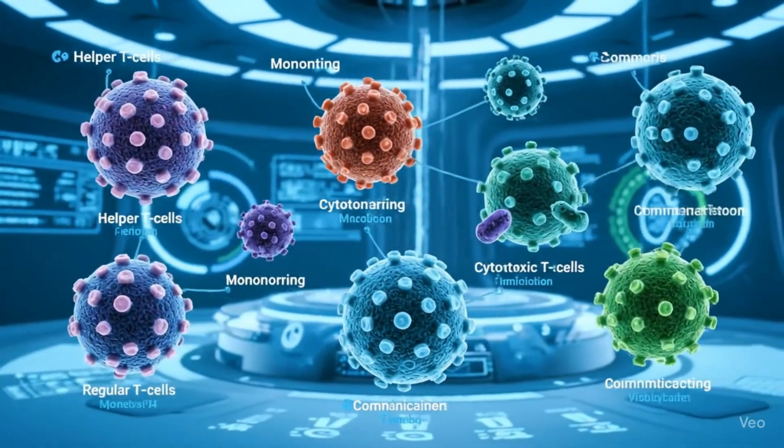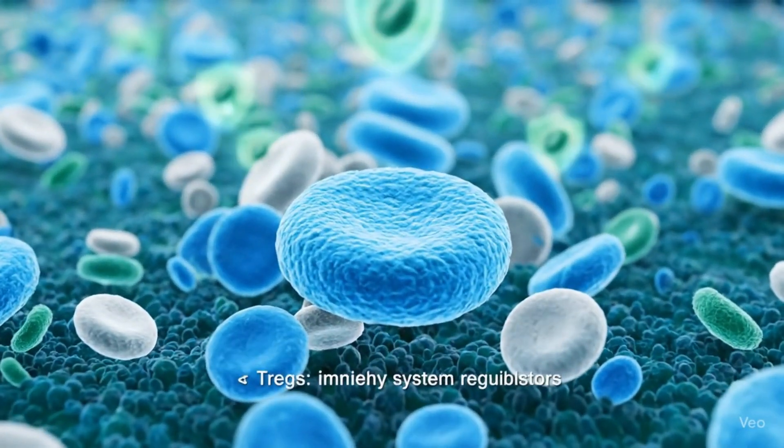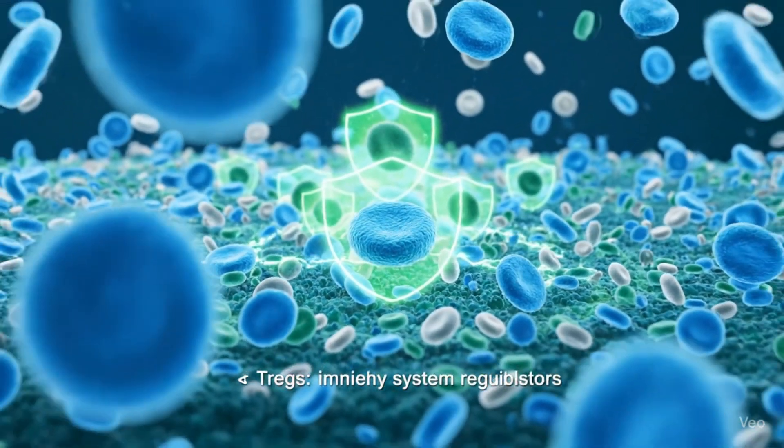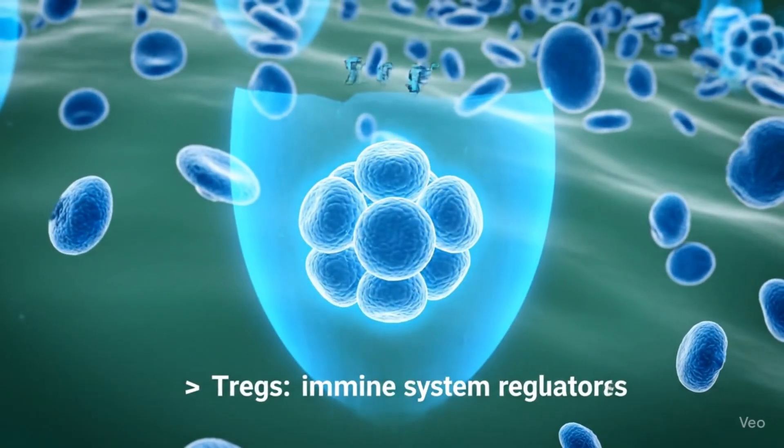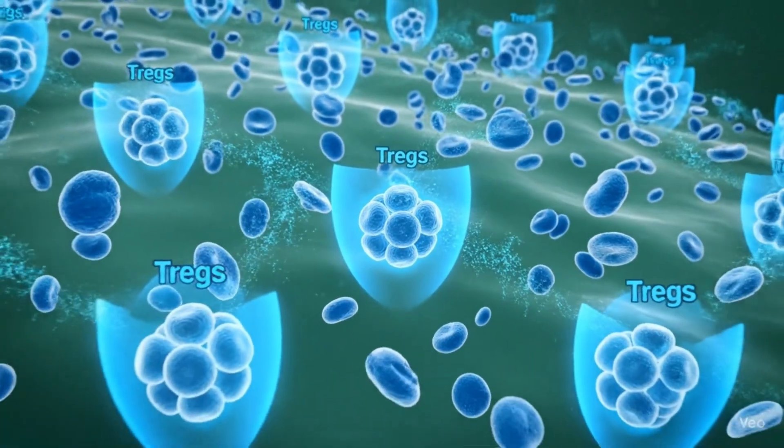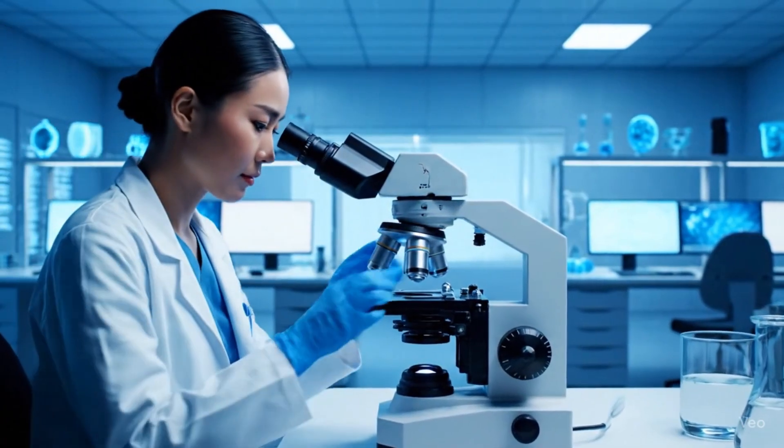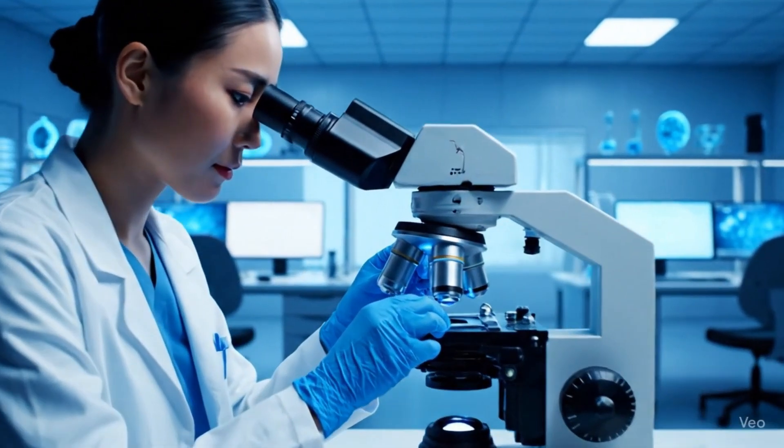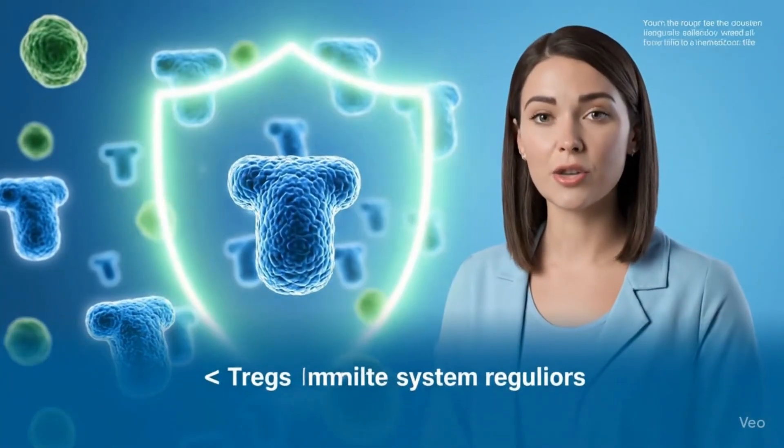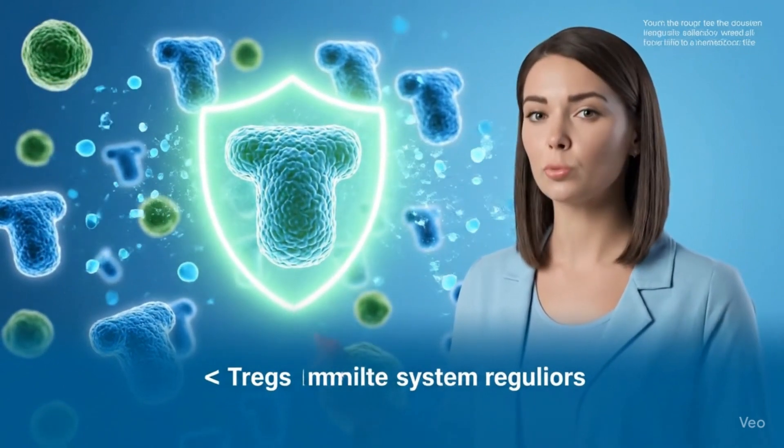The discovery of T-regs completely changed how scientists understand the immune system. Before this, many believed the immune system was always meant to fight. But this finding showed that the body also has built-in peacekeepers. These cells maintain what is called immune tolerance, the body's ability to tell the difference between self and foreign. This work has opened up new possibilities for treating a wide range of diseases.